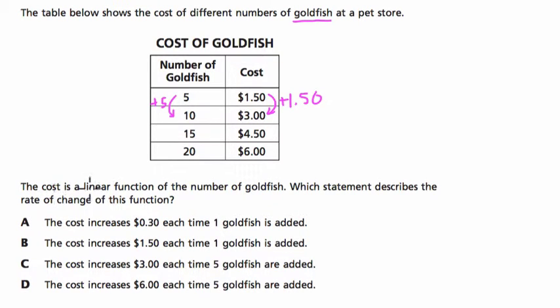Let's see what it says. The cost is a linear function of the number of goldfish. That's a fancy way of saying that the cost is going up with the number of goldfish in a constant way. There's a constant relationship there.